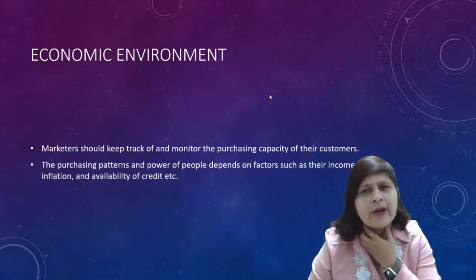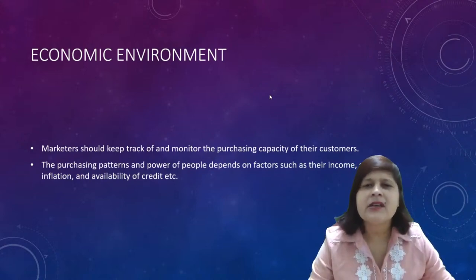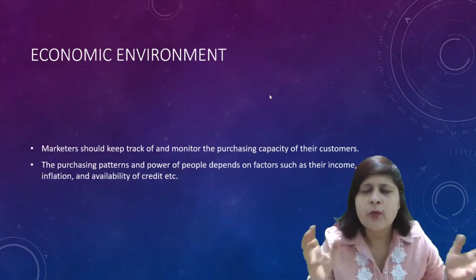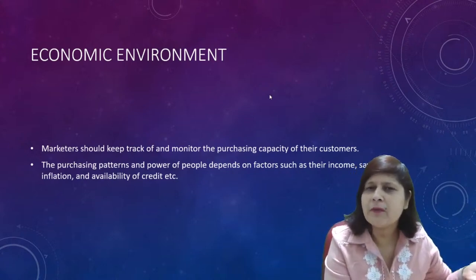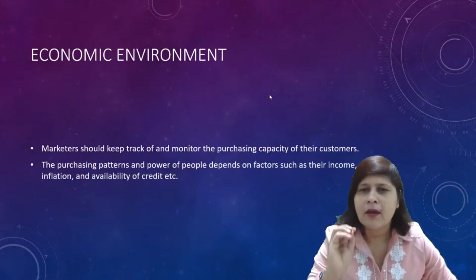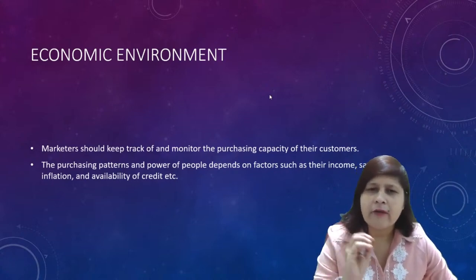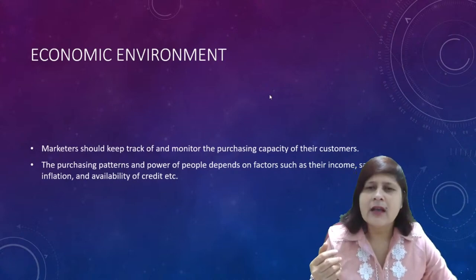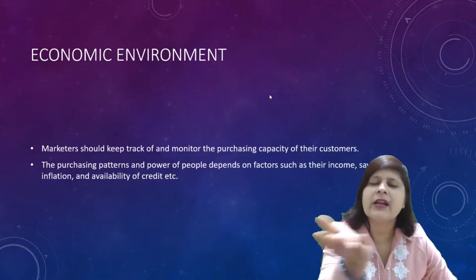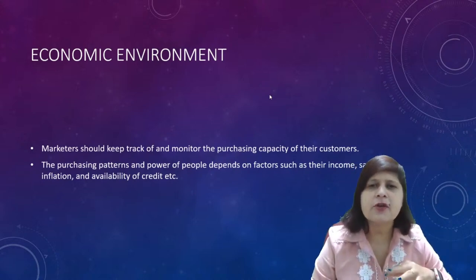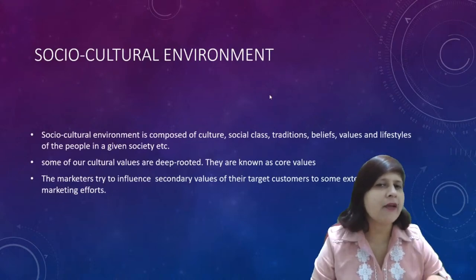Inflation reduces purchasing capacity. Availability of credit plays an important role — if companies offer products on credit, people prefer to buy because they can pay in EMIs. For example, rather than paying one lakh rupees at once, I can pay in installments. When the economy is doing well, companies are willing to provide credit facilities, and this enables customers to purchase products.